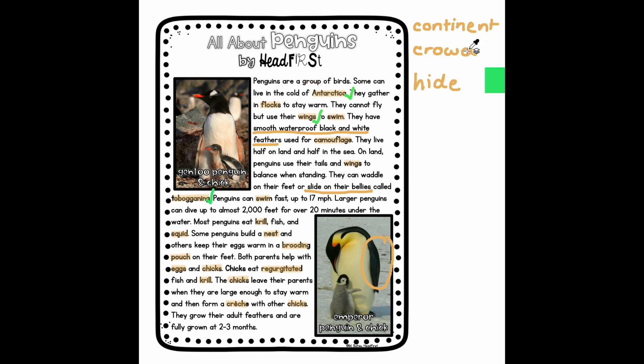We only have a few more unknown words left. Next we have brooding pouch as one of the unfamiliar words. The surrounding sentence says that penguins build a nest and others keep their eggs warm in a brooding pouch on their feet. So we know that the purpose of the brooding pouch is to keep the eggs warm. Because we have an example of what the brooding pouch does, we can think of it almost like a little area for the chicks to be hidden away — kind of like a kangaroo pouch. So I'm going to put warmth and shelter as ways to understand what a brooding pouch is.